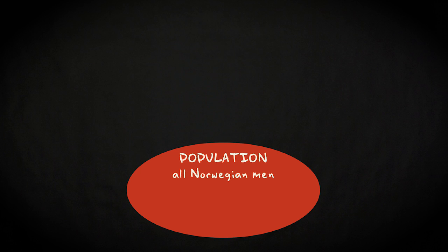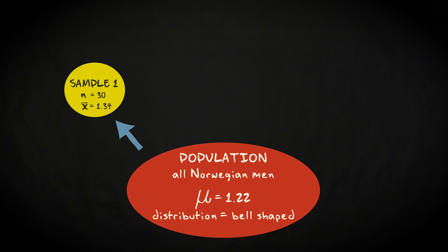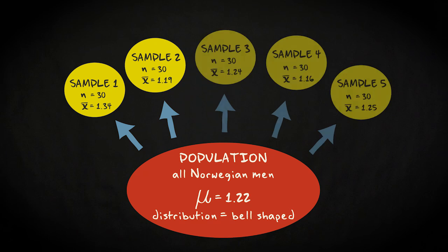Now imagine your population consists of all Norwegian men. You know that the mean beard length in this population is 1.22 mm, and that the variable has a bell-shaped distribution in the population. If you draw a simple random sample of 30 respondents, you will find a mean close to this value, say 1.34 mm. If you draw another random sample, the mean will be close to the population value of 1.22 as well. Say it is 1.19 mm. If you do that 5 times, you will get 5 different values, which are all close to the population value.